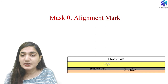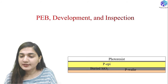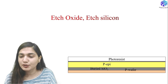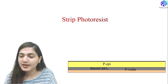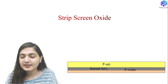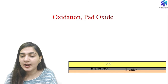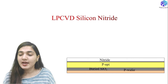Next, we apply photoresist coating and baking, then align mask zero with the photoresist, followed by the exposure phase, PEB development, and inspection. We etch out the photoresist at the desired location, then etch the oxide and the silicon beneath. After stripping the photoresist and screen oxide, we have a clean P-type epitaxial layer, cleaned again to be free of any contaminants.